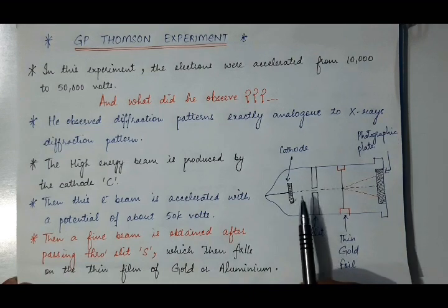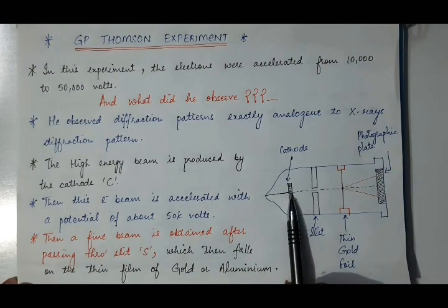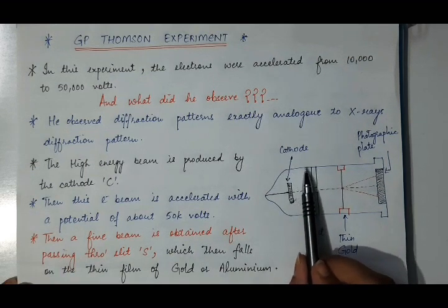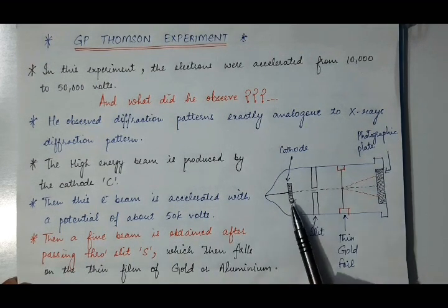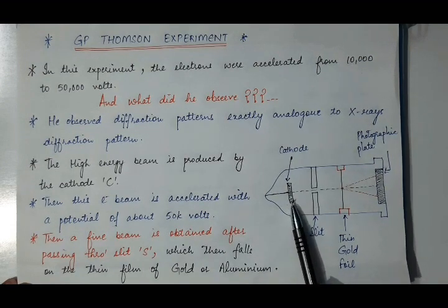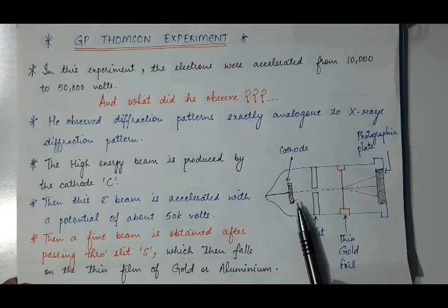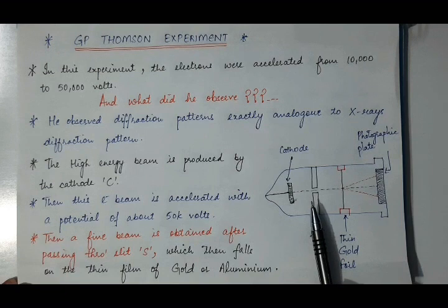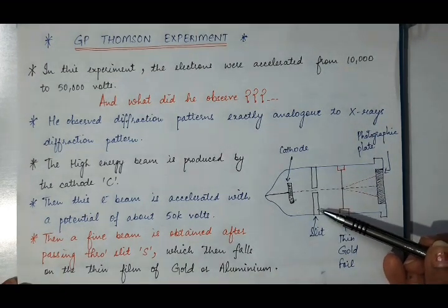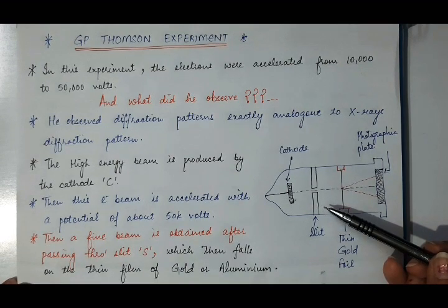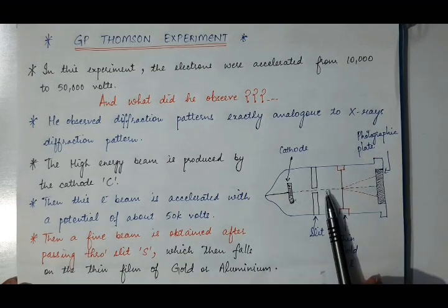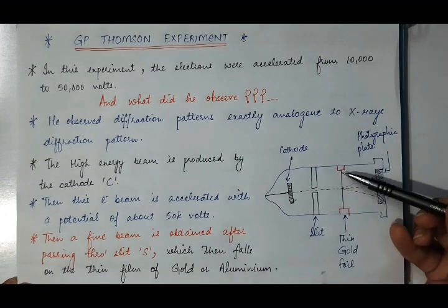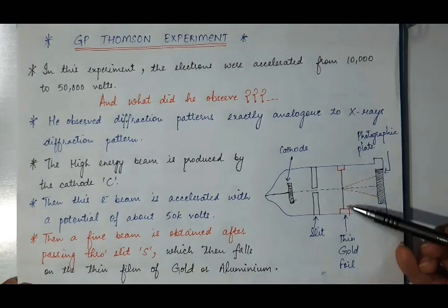Then, from this cathode, the potential is increased from 10,000 volts to 50,000 volts. It means, after the production of the high energy electron beam from this cathode, the electron beam will be further accelerated to a potential difference of 50,000 volts. Then there is a slit, and this highly energetic accelerated electron beam will pass through this slit and get converted into a fine, collimated — that is, directional — beam. This highly energetic directional electron beam is then made to fall on the thin gold foil or aluminum foil.